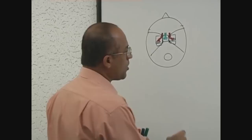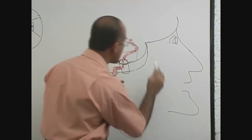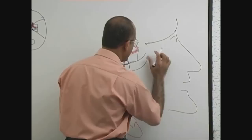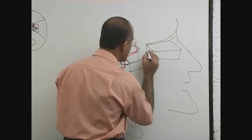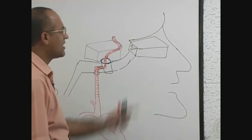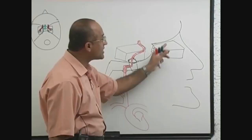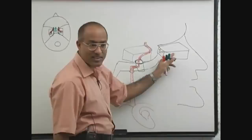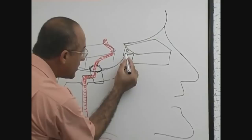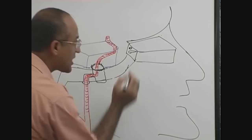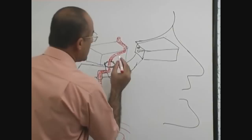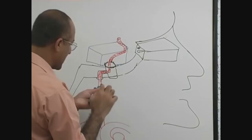Now let's look at the important branches coming from the internal carotid artery. Here is the orbital cavity — a large cavity. Here is the superior orbital fissure and the optic canal. I have drawn this to show some branches; the branches will be drawn in green.